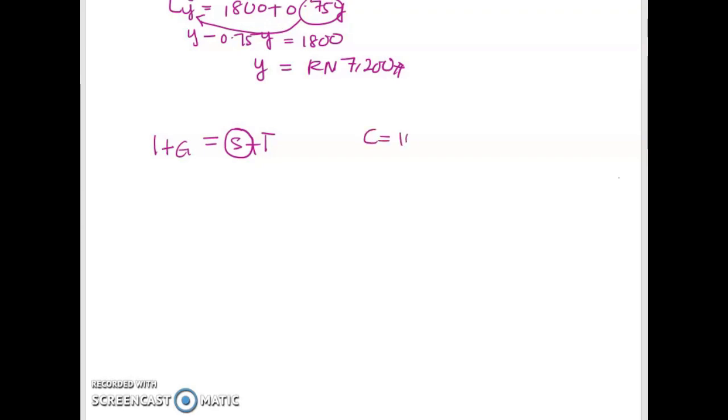Your C function is 1000 plus 0.75 YT. So to get S function is simply minus A. A is the intercept plus 1 minus 0.75 Y.